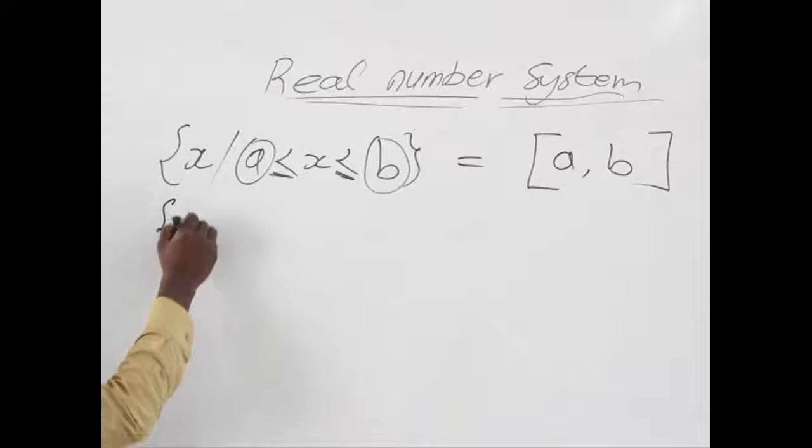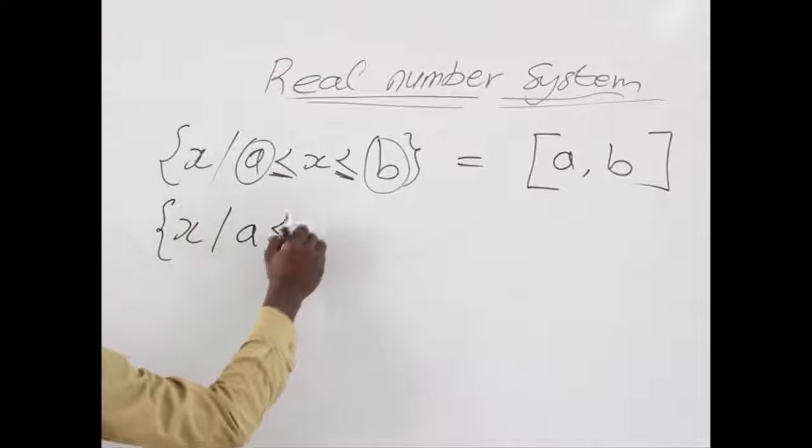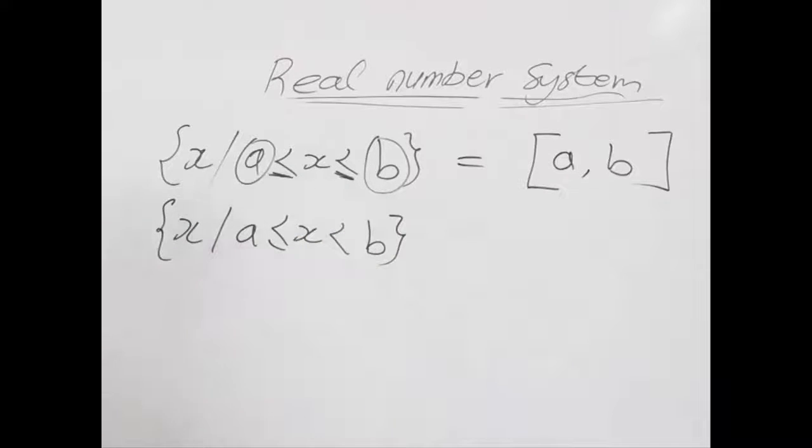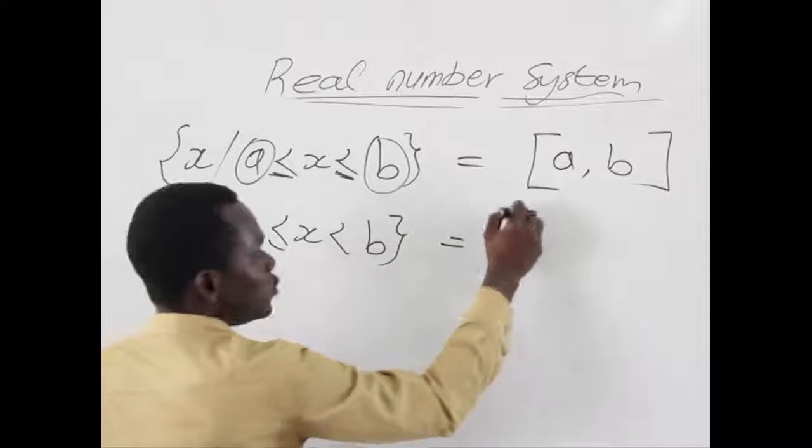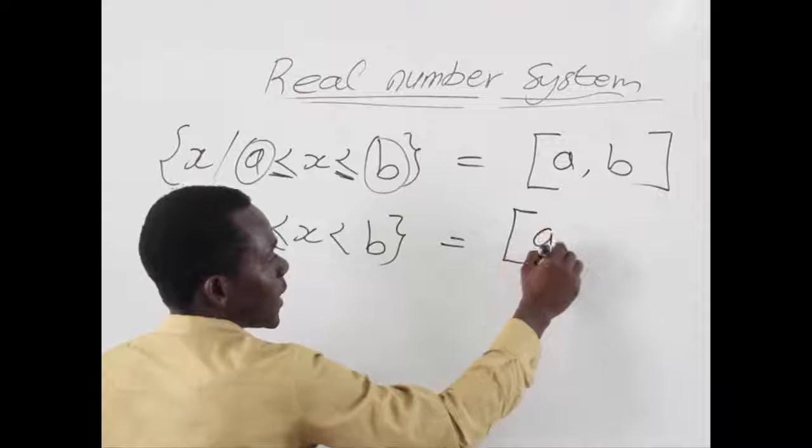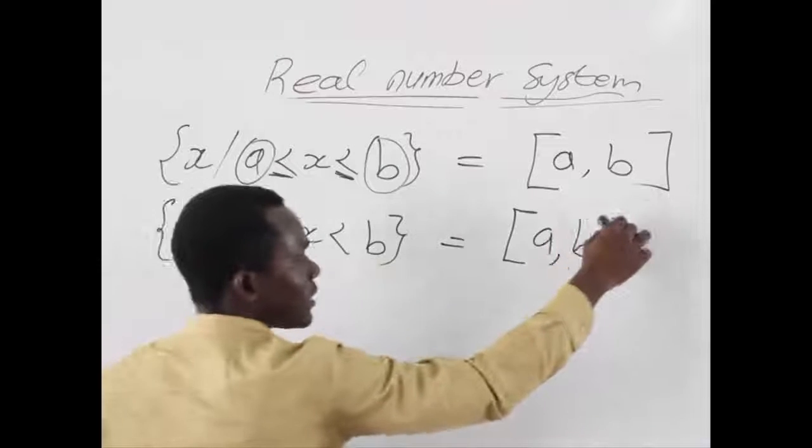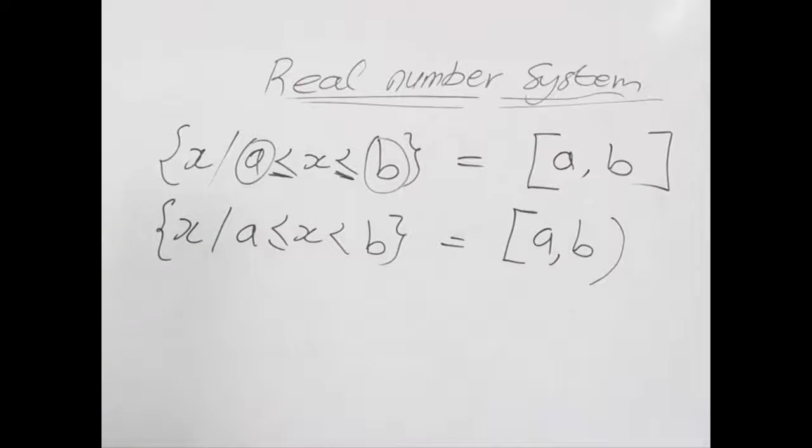In another case, here you can see that b is excluded from the range. How do we write that? Since a is included, we still use our square bracket, and b is excluded so we use our normal bracket to show that b is actually not part of the range.